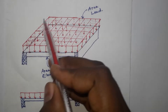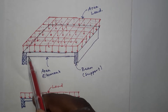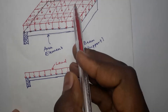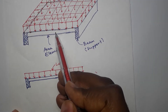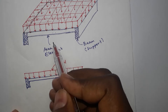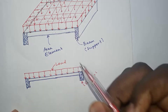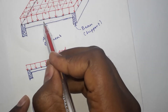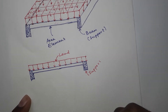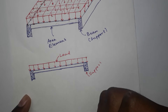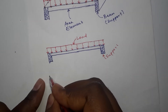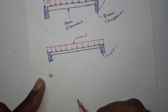So now we have this area load on this area element. When this load acts on this area element, this area element will respond to this loading in a different way. So if the member does have axial rigidity and does not have flexural stiffness, we will call it a membrane element.